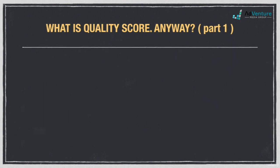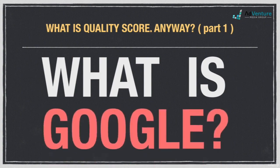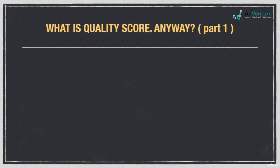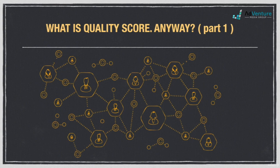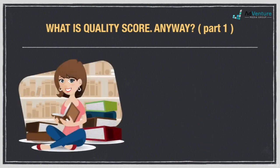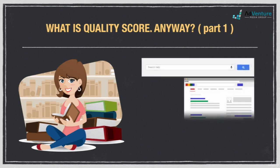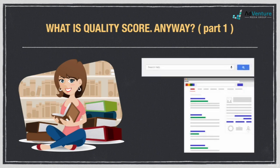In order to first understand what quality score is and how it came to be, it's important to first understand what Google is at its most fundamental level. Essentially, Google is a massive referral service. People come to Google looking for referrals. When people need to find something on the internet, they ask Google where they could find it. They ask Google this question by typing a query into the Google search box, and Google provides them websites that hopefully contain the information Google's customer was looking for.